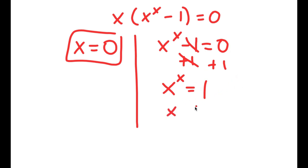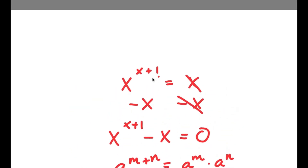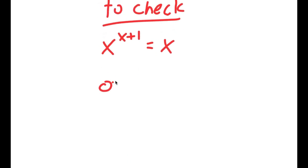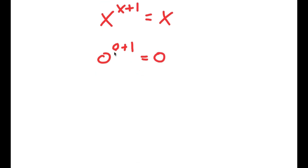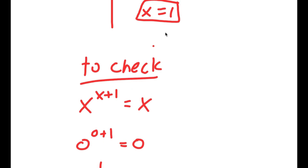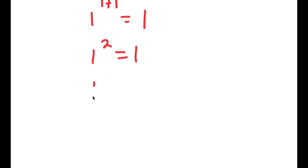1 to the power of 1 equals itself, so x is equal to 1. There's no other number that when you take the power of itself equals 1, meaning x equals 1 is the only solution to this equation. To check: x to the power of x plus 1 equals x. For x equals 0: 0 to the power of 0 plus 1 equals 0 to the power of 1, and 0 to the power of any number is 0, so 0 equals 0. For x equals 1: 1 to the power of 1 plus 1 equals 1 to the power of 2, and 1 to any power is 1, so 1 equals 1.